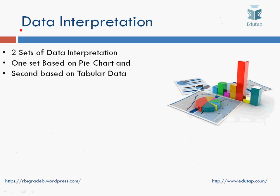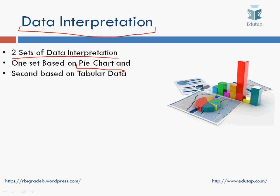Let us look at data interpretation. In 2016, there were two sets of data interpretation — two caselets. One caselet was based on a pie chart and the second caselet was based on tabular data.